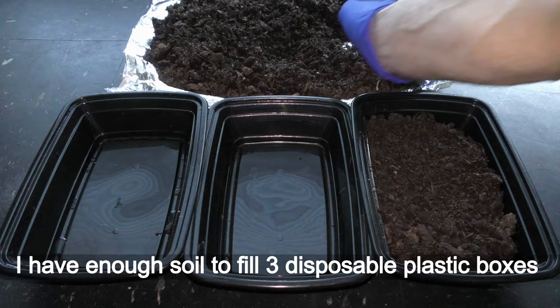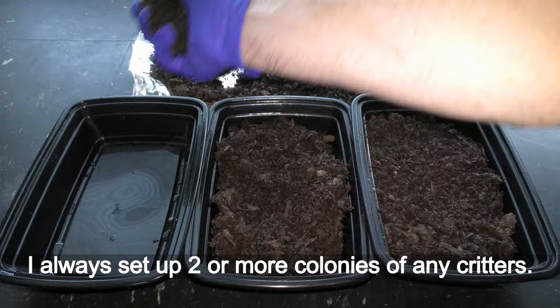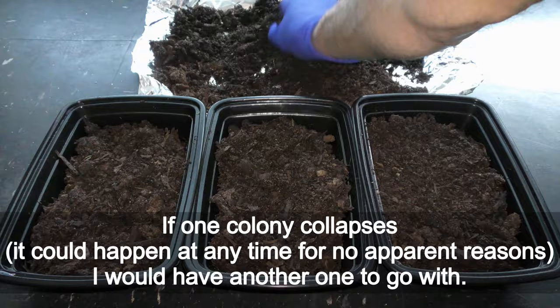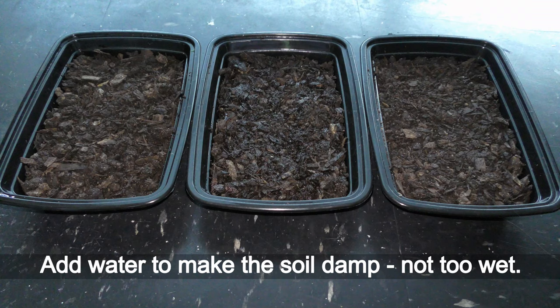Put about 1 inch layer of cooled soil into a box. I have enough soil to fill 3 disposable plastic boxes. I always set up 2 or more colonies of any creatures. If one colony collapses, it could happen at any time for no apparent reasons, I would have another one to go with.